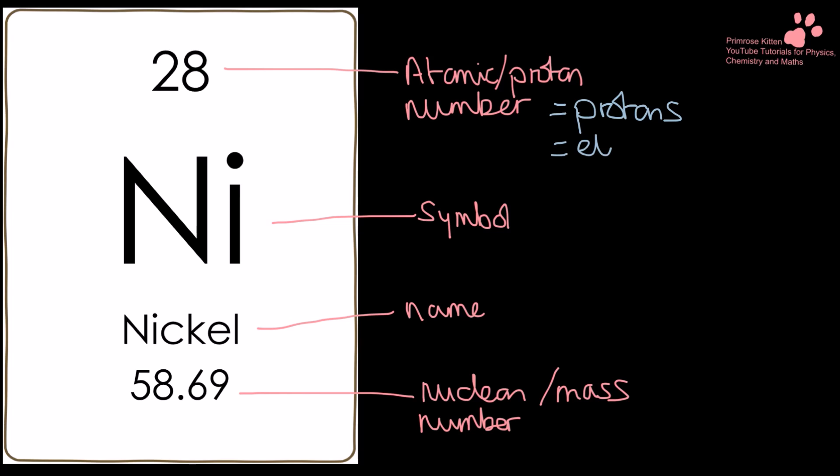It is also going to tell us the number of electrons in an atom, and only in an atom, not in an ion. We have the symbol here. This is really, really important because this doesn't change depending on whatever language you're speaking. So the periodic table is like a universal language for chemists. I can talk to somebody in a completely different country who speaks a completely different language, and as long as we are both using a periodic table, we can understand each other. Nickel is the name, and then down here we have the nucleon number or the mass number.